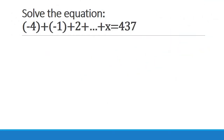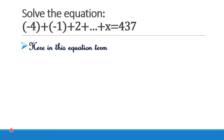We have to solve the given equation minus 4 plus minus 1 plus 2 plus etc., plus x equal to 437. First, note the terms: minus 4, minus 1, 2, and so on up to x. Look at these terms — they are in AP.